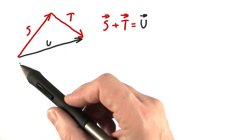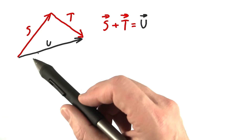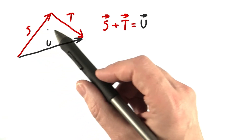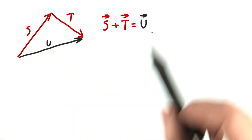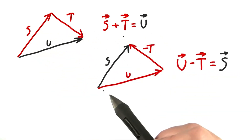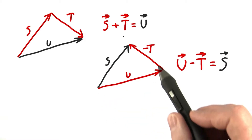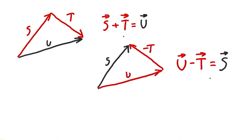We can also add and subtract vectors themselves. For example, S plus T equals U. We can also reverse this process — for example, U minus T equals S.